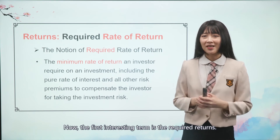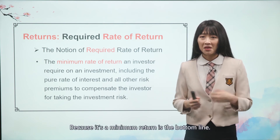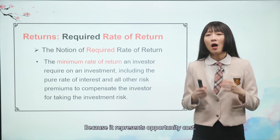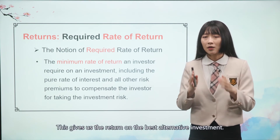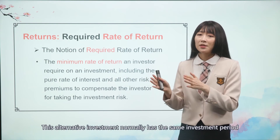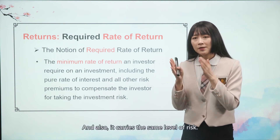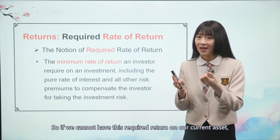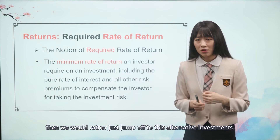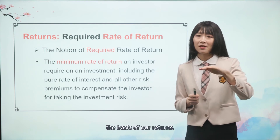The first interesting term is the required return. Required by whom? By ourselves, by investors. Why? Because it's a minimum return — it's the bottom line. Why is it a bottom line rate of return? Because it represents opportunity cost. This gives us the return on the best alternative investment. These alternative investments normally have the same investment period and the same level of risk as our current investment. So if we cannot achieve this required return on our current asset, we would rather jump to these alternative investments. That's an opportunity cost — it represents the bottom line, the basis of our returns.